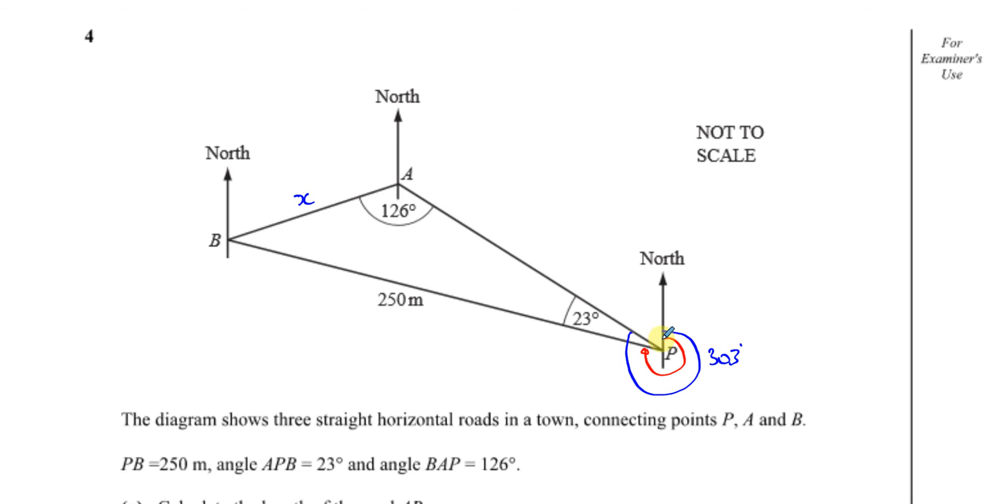This is the bearing of B from P. Start from P, face north, go clockwise until you reach the line going to B. The angle we want is 303 minus 23.